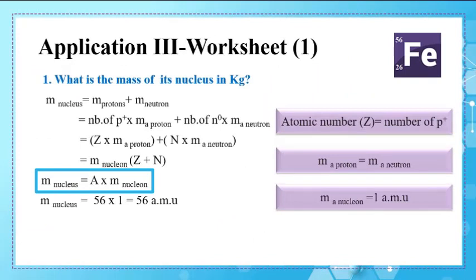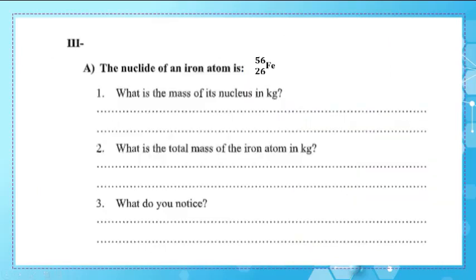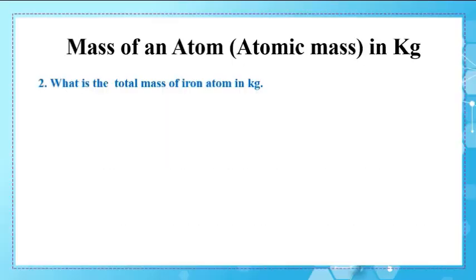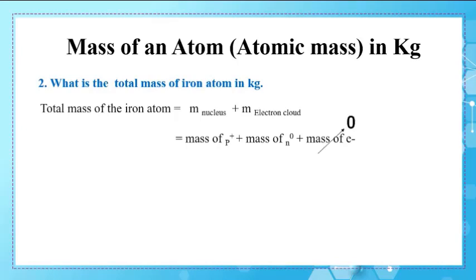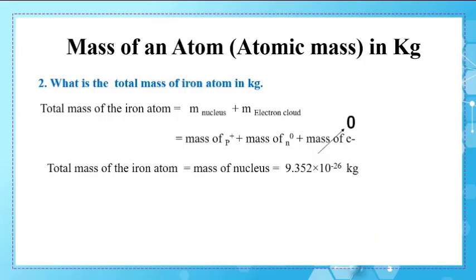Since the application asks for mass in kilograms, we convert from AMU: 1 AMU = 1.67 × 10⁻²⁷ kg. So we multiply 56 × 1.67 × 10⁻²⁷ = 93.52 × 10⁻²⁷ kg. For part 2: the total mass of the iron atom in kilograms. The mass of an atom equals the mass of its nucleus plus the mass of its electron cloud. Since electron mass is negligible, the total mass of the atom equals the nucleus mass: 9.352 × 10⁻²⁶ kg. We notice that the mass of an atom is concentrated in its nucleus.